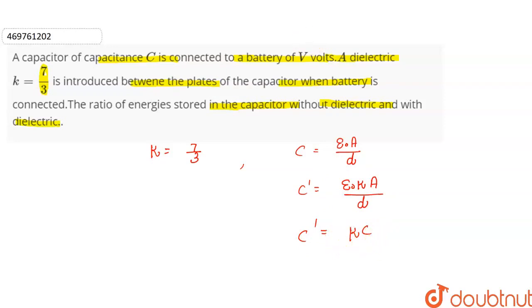This is our capacitance when the dielectric is introduced. K is equal to 7 by 3. Now here we will see the energy stored in the capacitor.